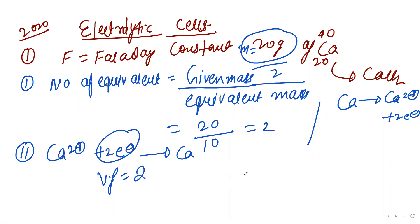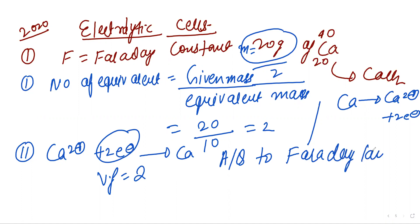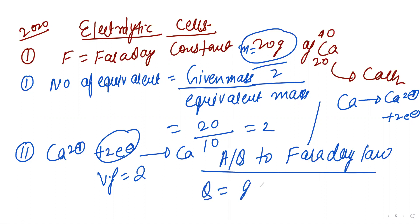According to Faraday's law, charge Q equals gram equivalents into Faraday constant. Gram equivalents we know is 2, and according to the formula, the balancing factor is 2. So 1 Faraday charge is required to produce 20 grams of calcium. Please correct: equivalent mass is 40 divided by 2 equals 20.